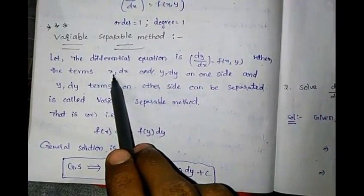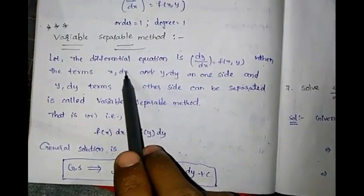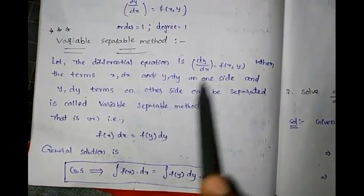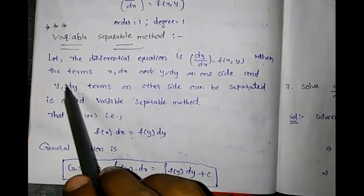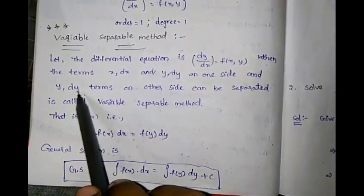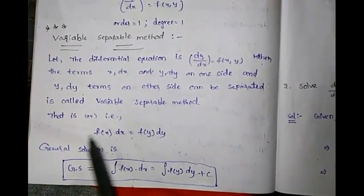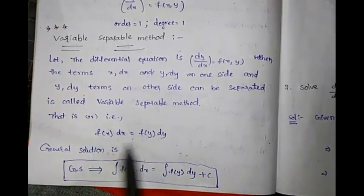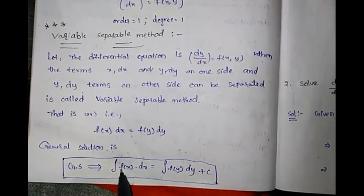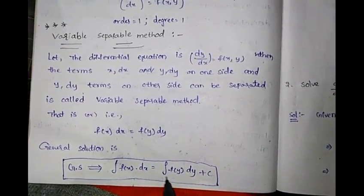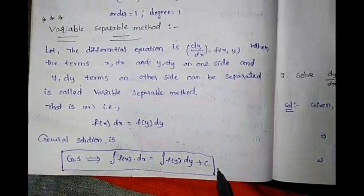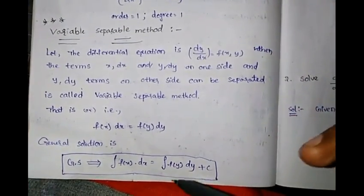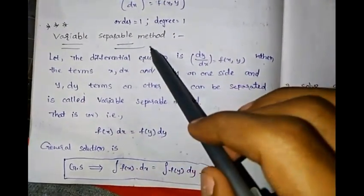We separate f(x)·dx terms and f(y)·dy terms. If we apply integration, we have the general solution: ∫f(x)dx = ∫f(y)dy + c. This is the general solution for the Variable Separable Method.